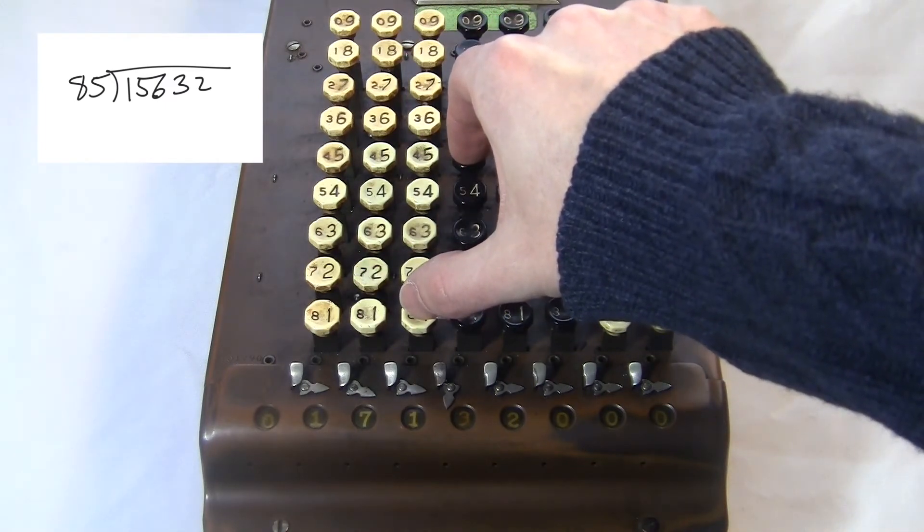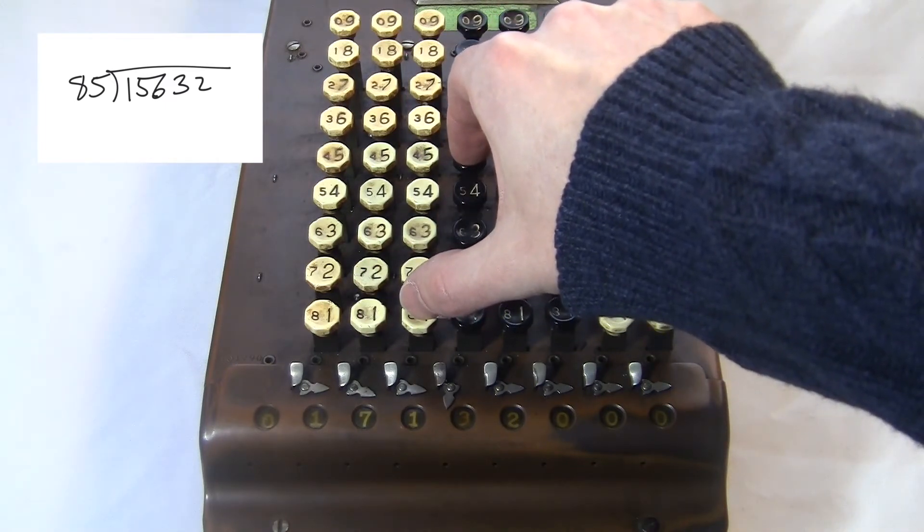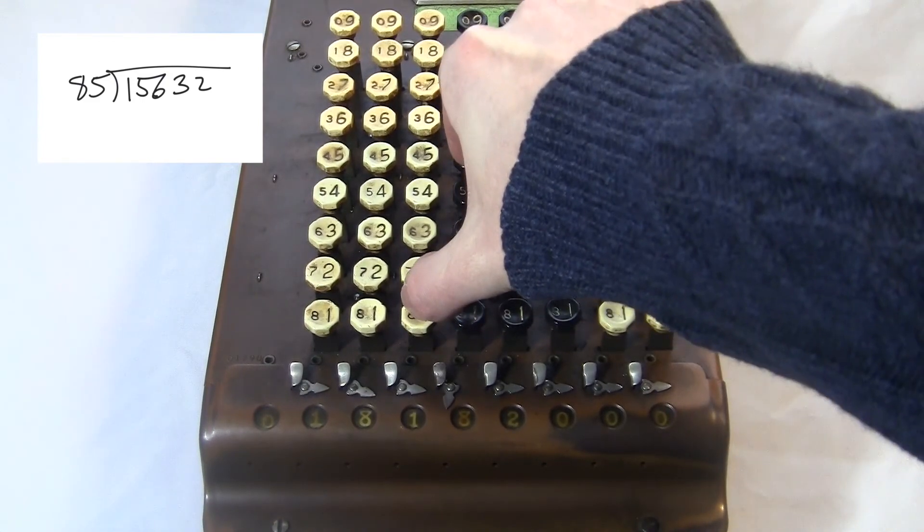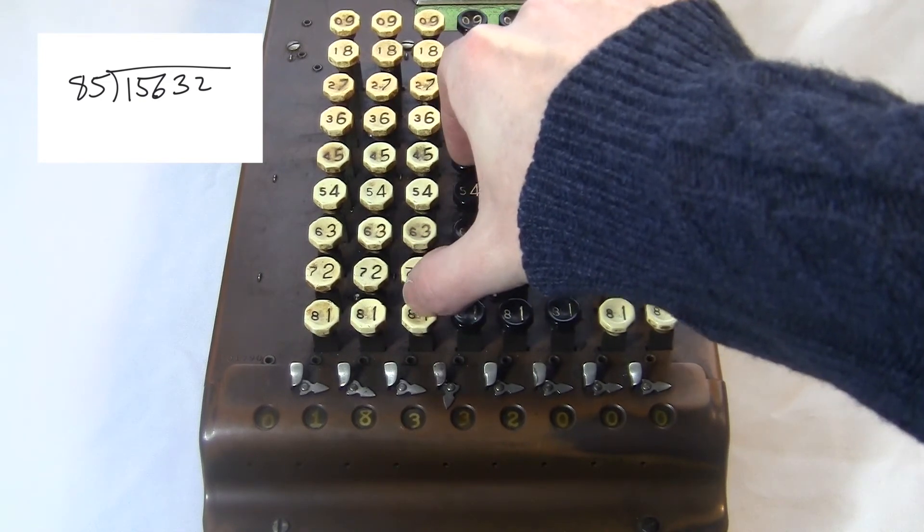Now the digit immediately to the left is a seven, so I'm going to subtract seven times. Actually, while I was doing it, the digit turned to an eight, so actually I subtract eight times. You keep on subtracting until the number of times you subtracted equals the number immediately to the left.